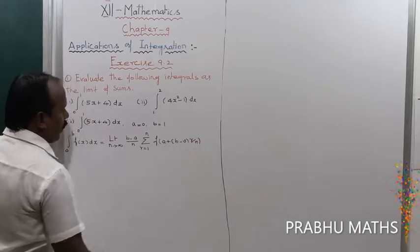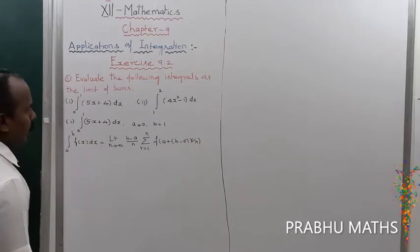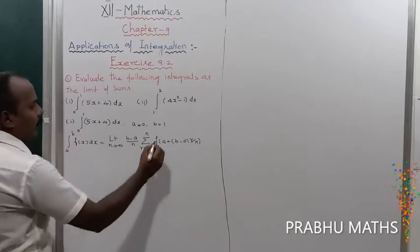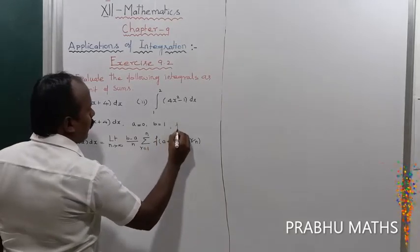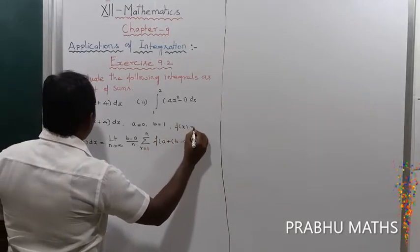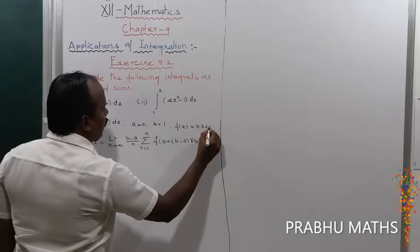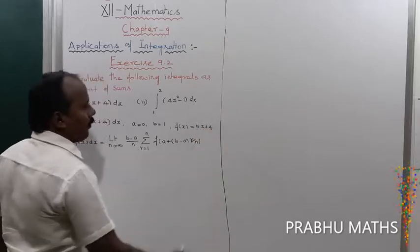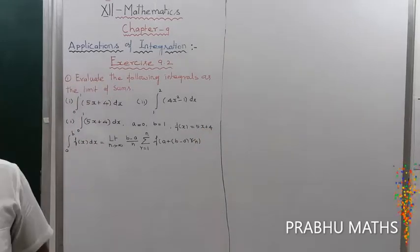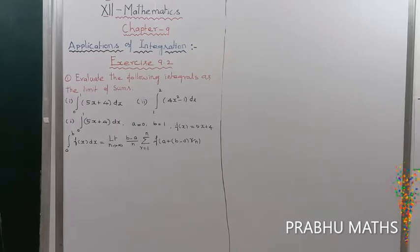Now, a is equal to 0 and b is equal to 1. f(x) is equal to 5x plus 4. Now apply the formula.